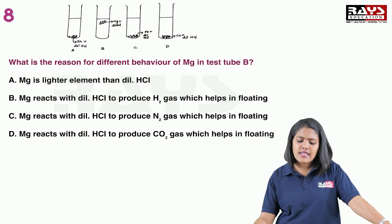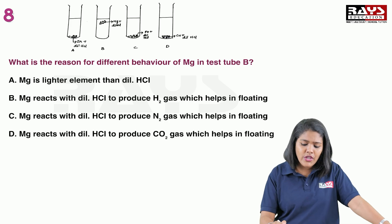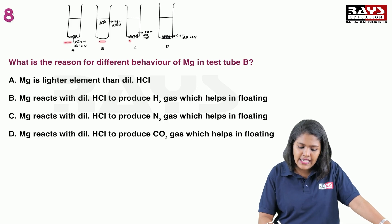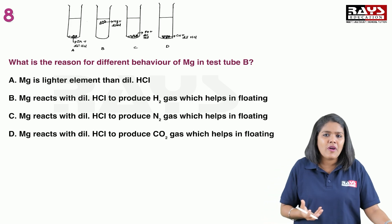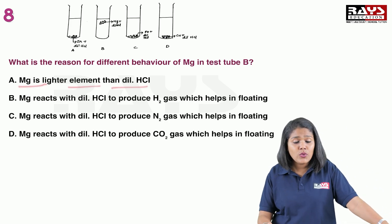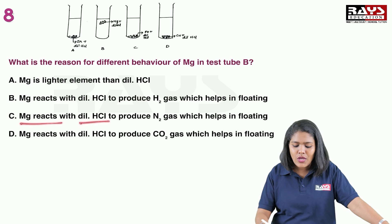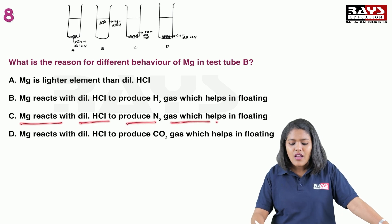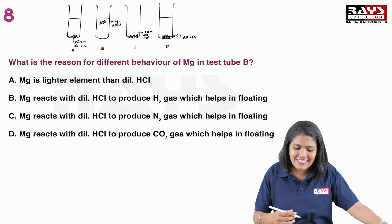Next question: what is the reason for the different behavior of magnesium in test tube B? Here, different metals are placed in acid. The first option says magnesium is a lighter element than dilute HCl. The correct option is that magnesium reacts with dilute HCl to produce hydrogen gas, which helps in floating.